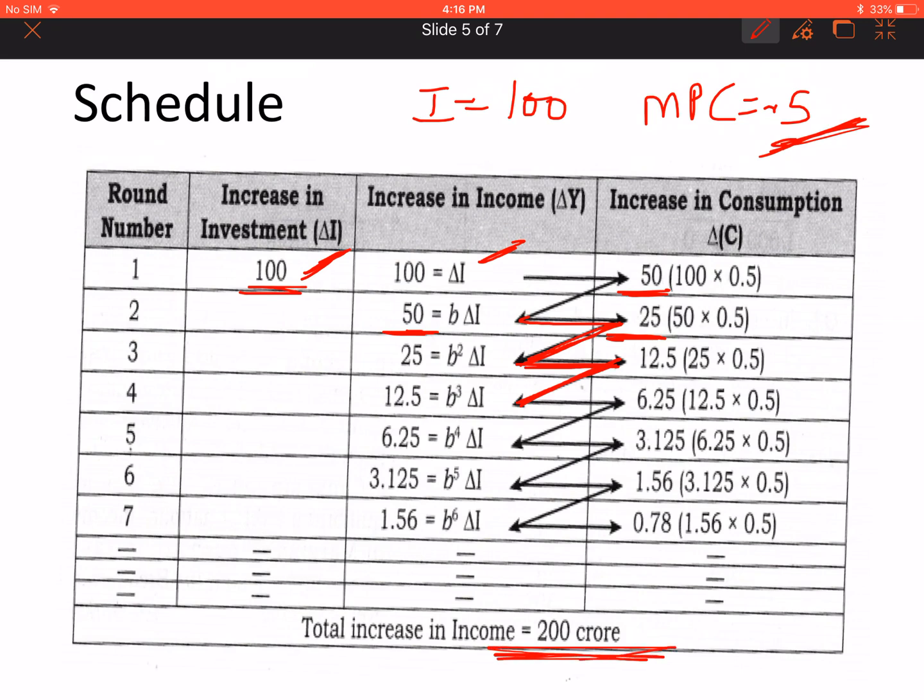Because my multiplier value is k = 1/(1-0.5) = 2. So if change in investment is 100, then change in income will double to 200. So till my total increase in income reaches 200 crore, this process will continue. This is the way you need to present it with the help of a schedule.